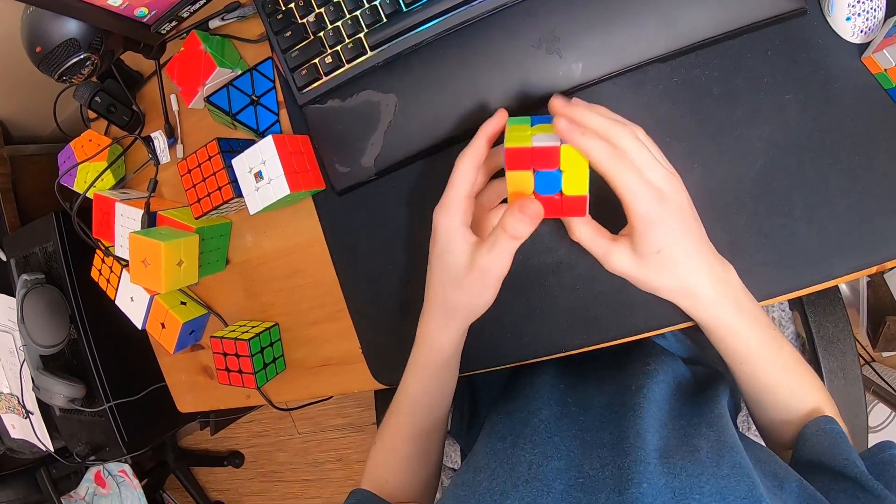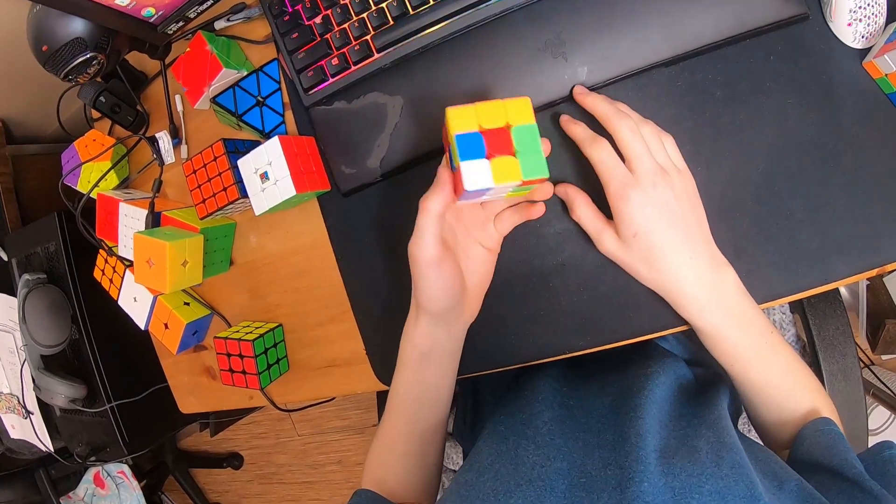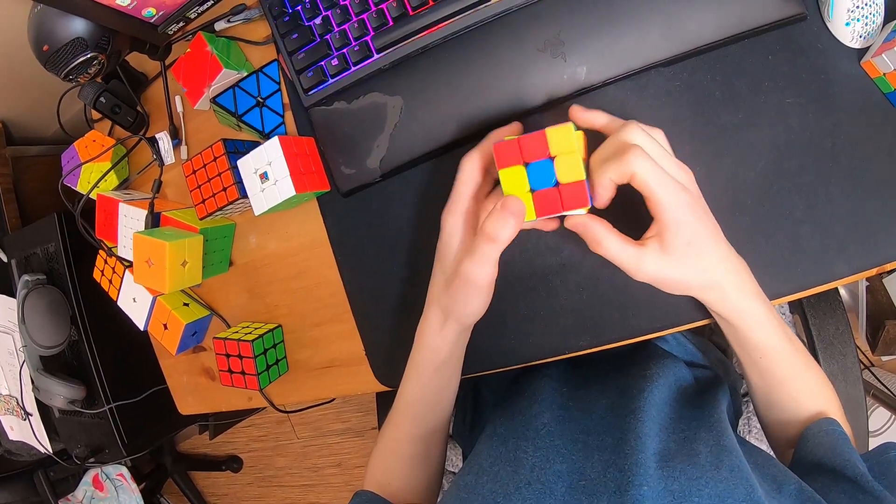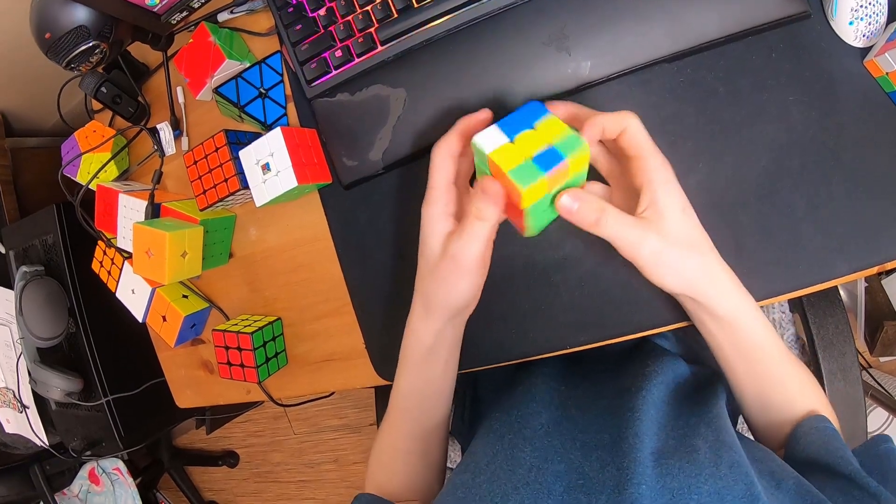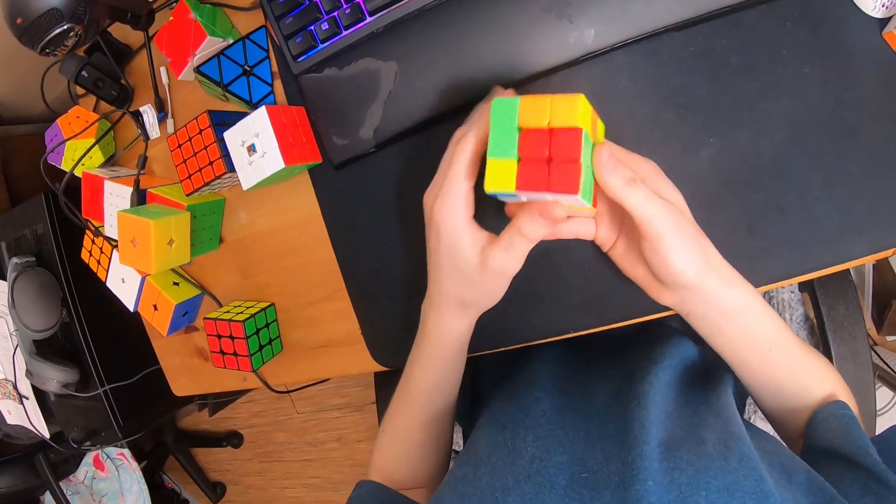The first scramble was a white cross, it was actually a white x-cross, so I did f2, rd'r'd2, and that solves this block.